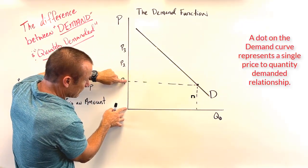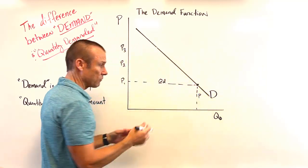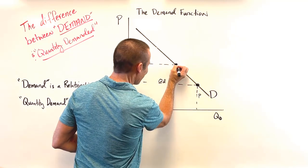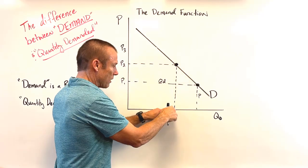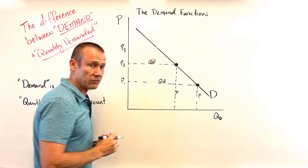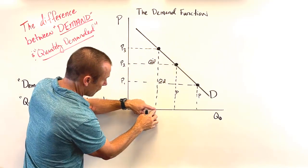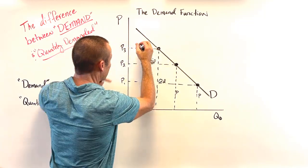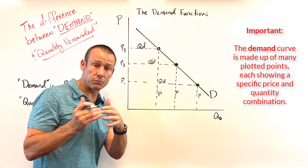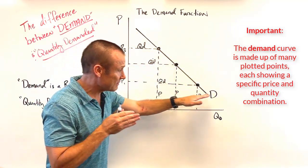I'm going to put a few prices on here — price one, price two, and price three. Demand is made up of a bunch of different dots. For each dot: the vertical distance is the price, the horizontal distance is the quantity demanded. So each dot represents a price-to-QD relationship. These are three specific coordinates on our demand curve — every dot is on the same single demand function.